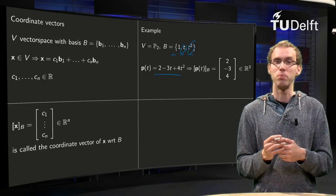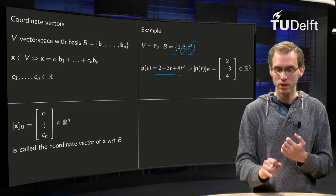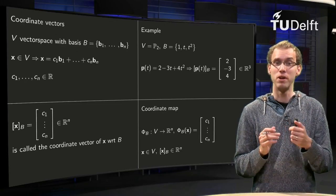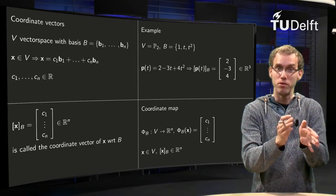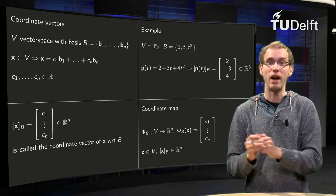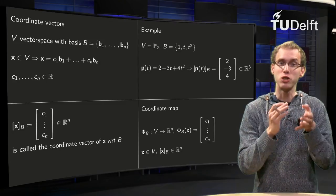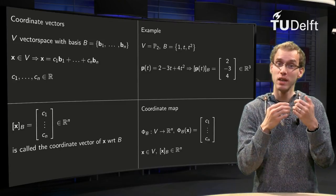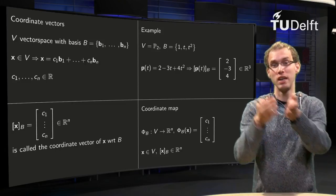Finally, already for later purposes, what we are actually doing is the following. We have a so-called coordinate map φB going from vector space V to R^n. This φB, this coordinate map, assigns to every point in the vector space, so to any x in the vector space, its coordinate vector in R^n.